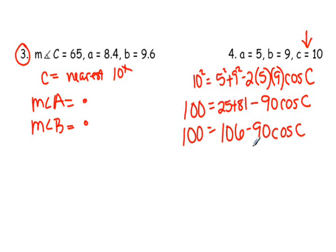And you're super, super, super tempted to subtract these two. But this is multiply times cosine C. So, it's almost as if this were 106 minus 90X. These two are not like terms. You cannot combine them.